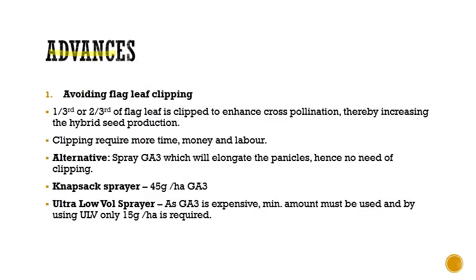The first advance is avoiding flag leaf clipping. In flag leaf clipping, one-third or two-thirds of the flag leaf is clipped to enhance cross pollination and thereby increase hybrid seed production. But clipping requires more time, money, and labor. If we can avoid this, we can reduce the production cost. An alternate is to spray GA3, which will elongate the panicles, hence eliminating the need for this clipping process.